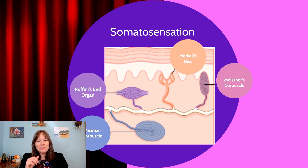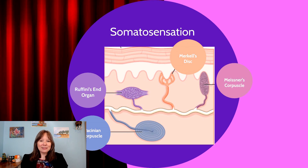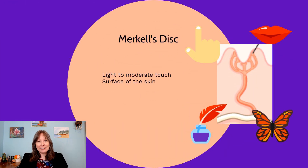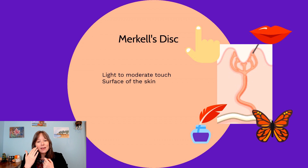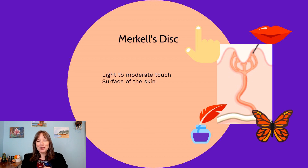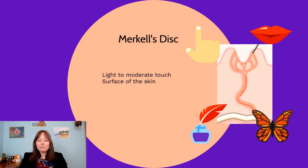In somatosensation, we actually have at least four different types of specialized cells, which look very different from rods, cones, or auditory hair cells. These are Merkel's disc, Meissner's corpuscle, Ruffini's end organ, and Pacinian corpuscles. Right at the surface of the skin, Merkel's disc is sensitive to light or moderate touch — things like a butterfly's wings, a tender kiss, or a feather against your chin.